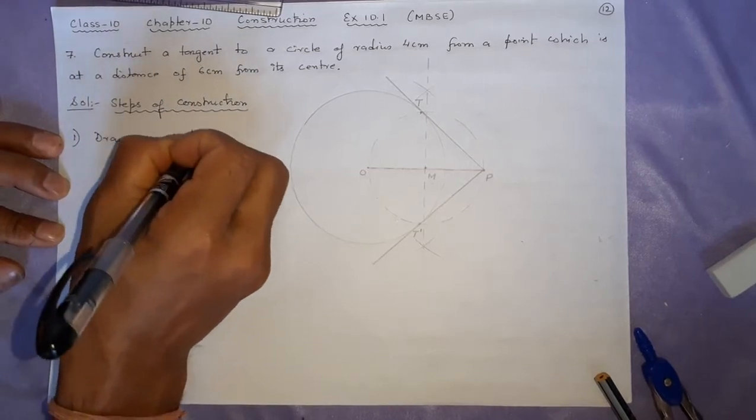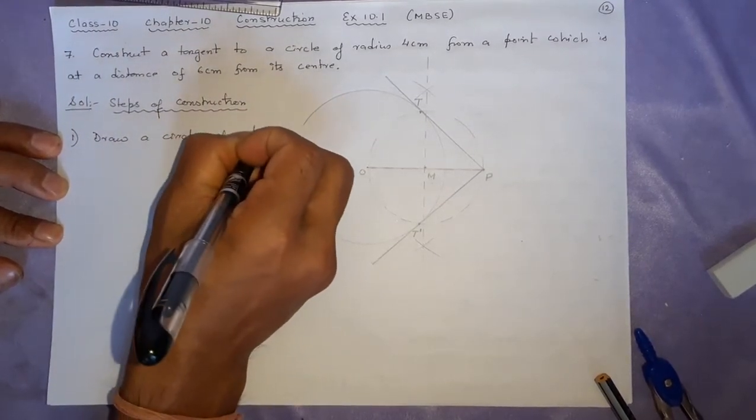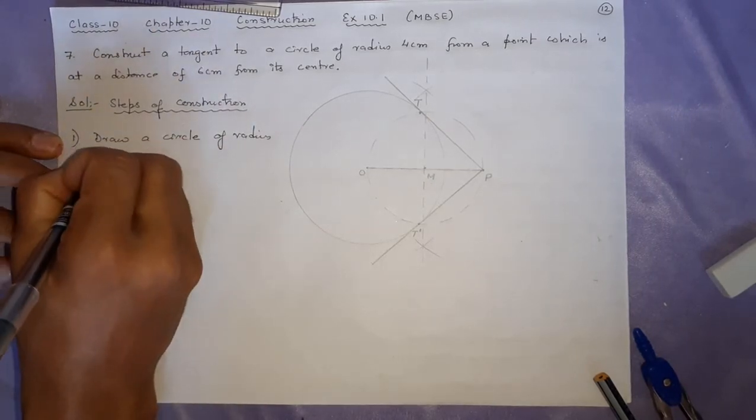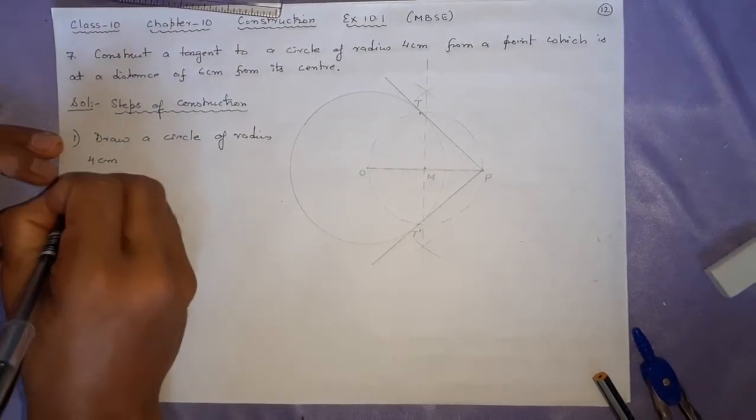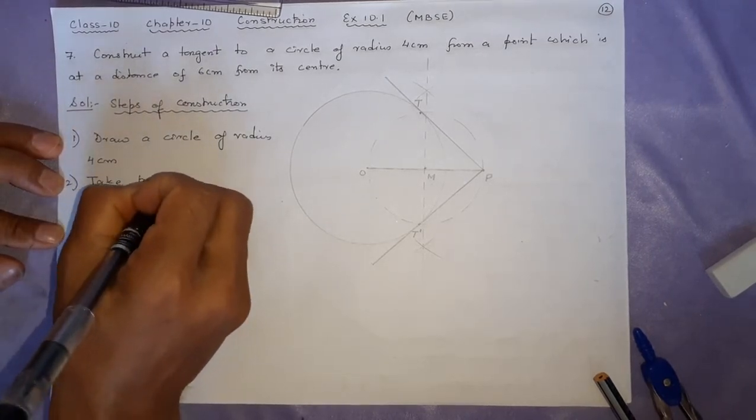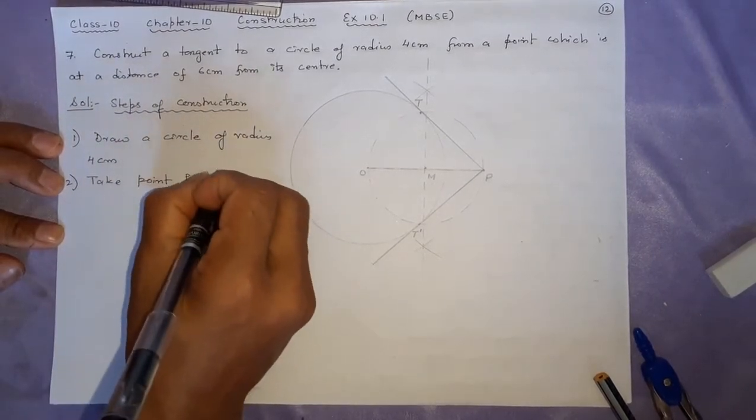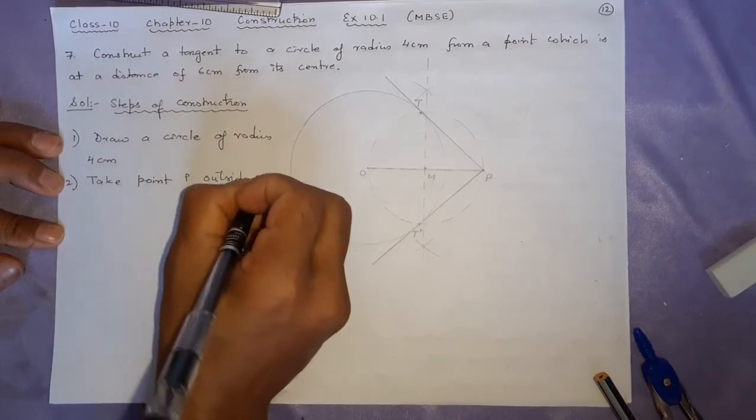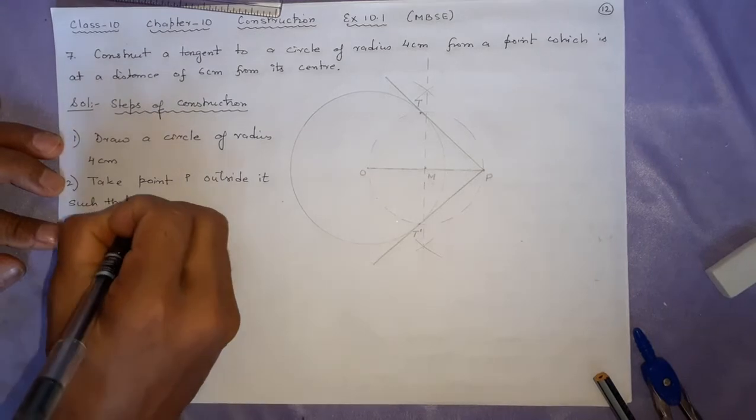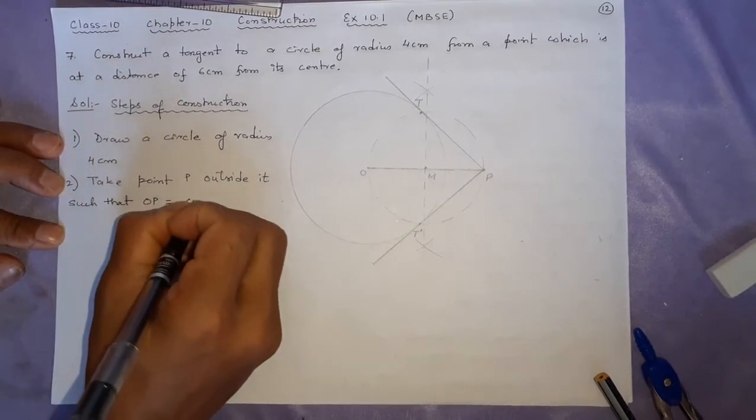Step 1: Draw a circle of radius 4 centimeters. Step 2: Take point P outside it such that OP equals 6 centimeters.